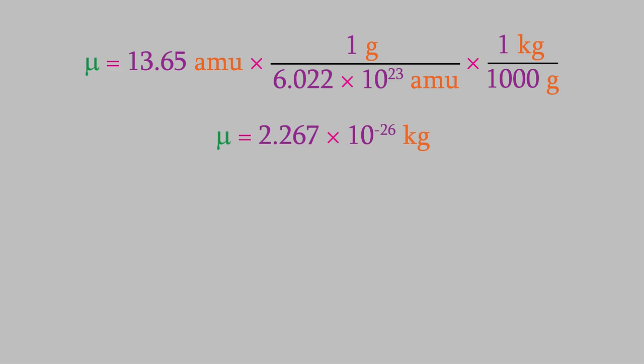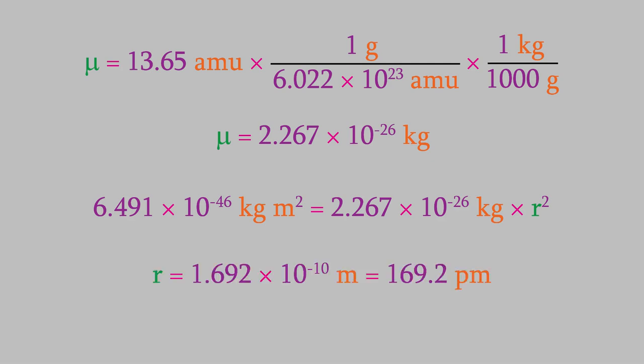We use that in our equation for the moment of inertia. And we find that that gives us r is equal to 1.692 times 10 to the minus 10 meters, or 169.2 picometers. So that's the equilibrium bond length.